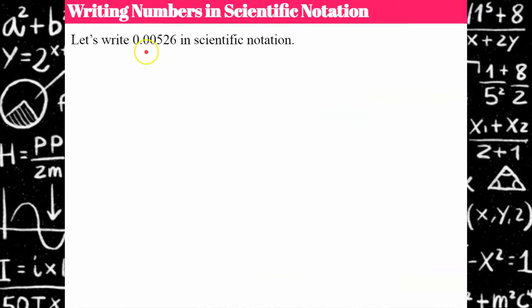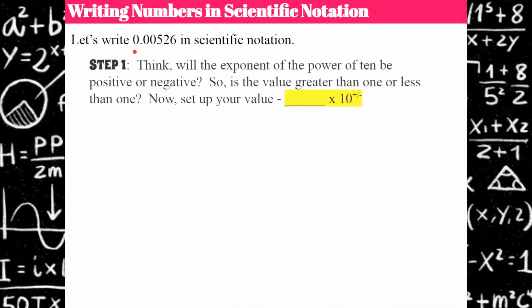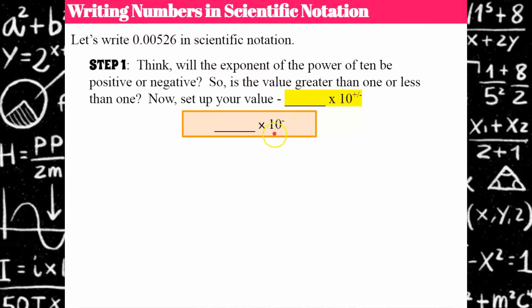I'd like you to try this one — a little bit different. Go ahead and pause, come back and hit play when you're ready. Welcome back. Step one was to think: this number is smaller than one, so I know my integer exponent needs to be negative. I've made my plan. I have my space for my factor, I'm going to multiply by base 10, and it's going to have a negative exponent.